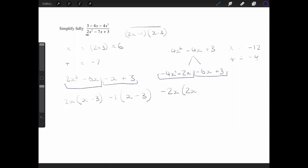And that will leave me with 2x minus 1, which is the factor that I'm looking for. And then on this side I'm going to pull out negative 3, which will then give me 2x minus 1.